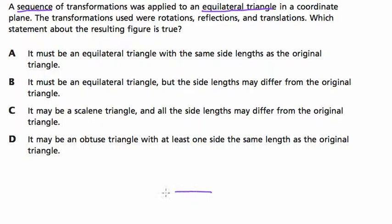So a sequence of transformations was applied to an equilateral triangle in a coordinate plane. So that means you've got our x and our y, and somewhere on this plane there is an equilateral triangle, a triangle where every side is exactly the same. We'll call that triangle e.